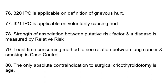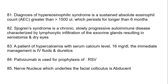Strength of association between a putative risk factor and a disease is measured by relative risk. The least time-consuming method to see the relation between lung cancer and smoking is a case-control study. The only absolute contraindication to surgical cricothyroidotomy is age.